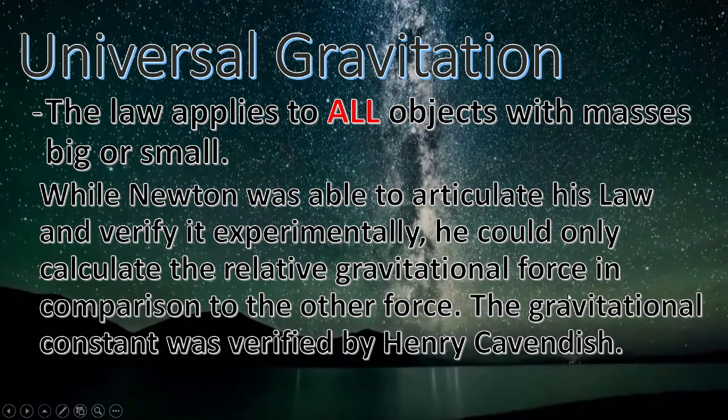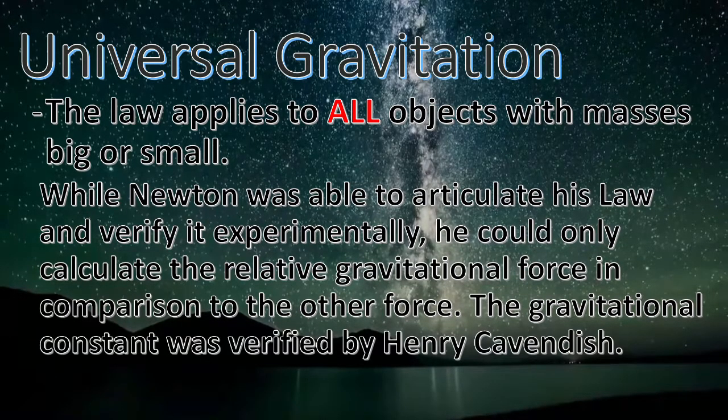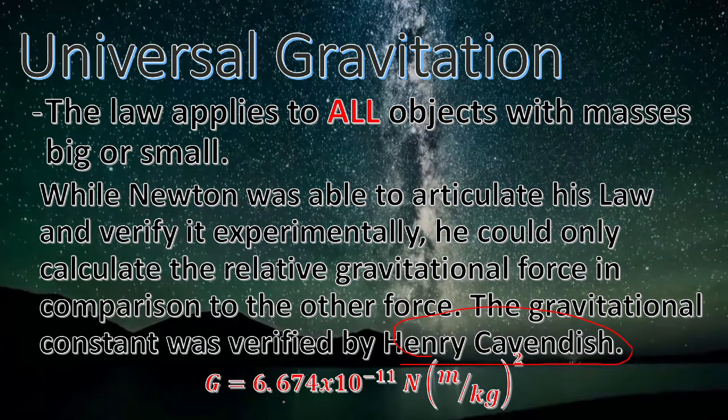While Isaac Newton was able to produce the experiment and prove his law, he was actually missing the constant, the one we talked about earlier, that a proportionality will always have a constant. Thanks to Henry Cavendish, he was able to derive or get the constant, which is equivalent to 6.674 times 10 to the negative 11.